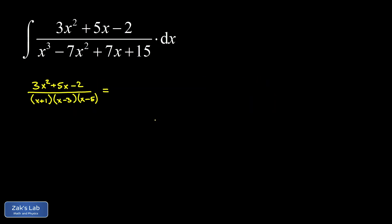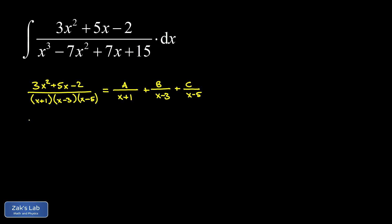Now we can get into the partial fractions decomposition. We re-express the integrand as (3x squared plus 5x minus 2) over (x plus 1)(x minus 3)(x minus 5). Our partial fractions proposal is to represent this as a sum of three fractions, each containing only one of those denominator factors. We have three unknown constant numerators A, B, and C. The first step is to clear all denominators by multiplying through by (x plus 1)(x minus 3)(x minus 5).